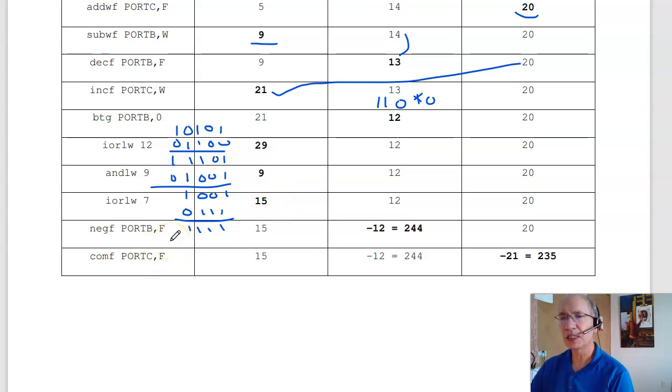Negate port B. Let's take the 2's complement of port B. Put the result in port B. So 12 becomes minus 12, which is the same thing as plus 244. You can always add or subtract 256 and get the same answer. Complement port C. Let's take the bit pattern and flip the bits. So 20 is 16 and 4. 1, 2, 3, 4, 1, 2, 3. There's 20. Flip all the bits. That corresponds to minus 21 or 235.